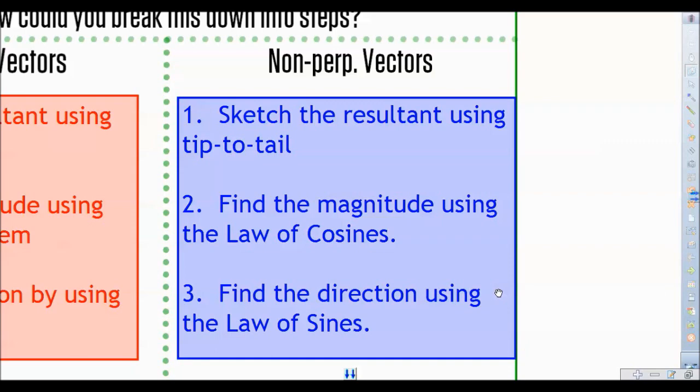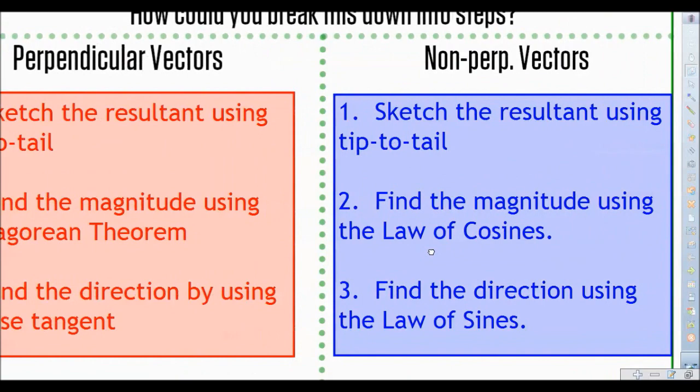So when the vectors are not perpendicular, one thing that is a common thread with the last one we did here is that step one is going to still be sketching the resultant tip to tail.